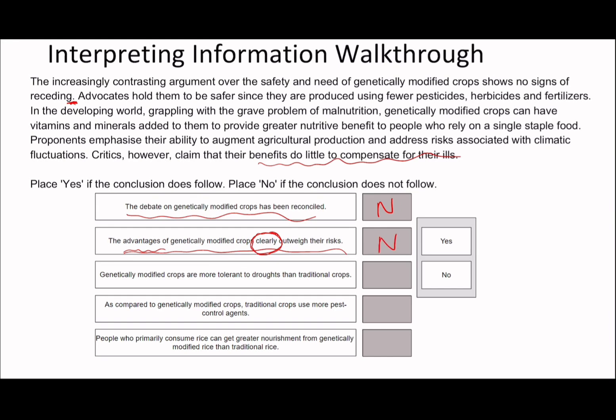The third question: 'Genetically modified crops are more tolerant to droughts than traditional crops.' This is where we separate a little bit from verbal reasoning, because it doesn't mention the word 'droughts' anywhere in the text. But we remember reading something about climate, so we go to that line: 'Proponents emphasize their ability to augment agriculture production, address risks associated with climatic fluctuations.' In VR, this answer would be can't tell — because how do we know they're talking about droughts and not other climatic fluctuations like thunderstorms, heavy rainfall, or tornadoes?